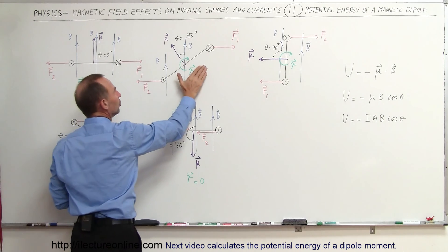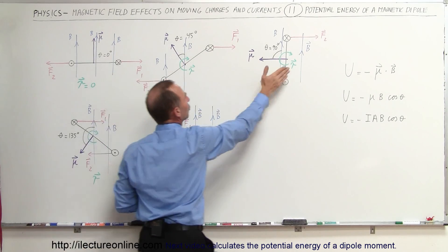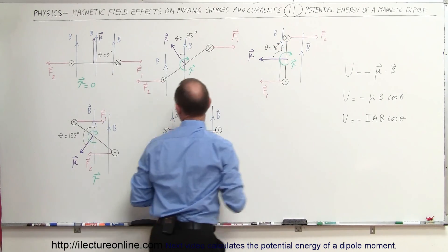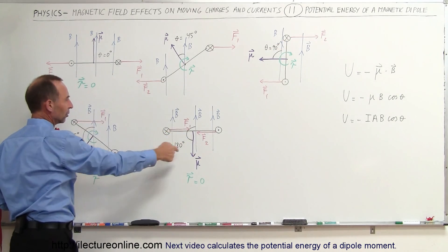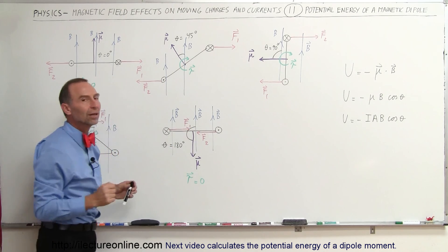Now, as we turn the loop here, you can see now that the angle begins to increase. We continue to turn the loop even more, begins to increase some more, and we continue to turn the loop until the loop is upside down, so to speak, and notice now that we've moved to an angle of 180 degrees.